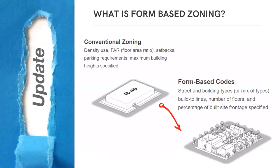Form-based codes offer a new way of thinking about development regulations. They act as design guidelines and address the relationship between building facades and the public realm. They address the relationship between the form and mass of buildings in relation to one another, and they address the scale and the type of streets and blocks. Whereas in conventional zoning, there isn't a lot prescribed for how the building needs to interact with the street. I'm going to play a short video that helps illustrate what a form-based code is and how it differs from conventional zoning. Pay attention to how streets are transformed from somewhat bleak and lifeless places to active and visually appealing places by using regulations that prescribe how the building should actually interact with the public realm. This video comes from the Form-Based Codes Institute.